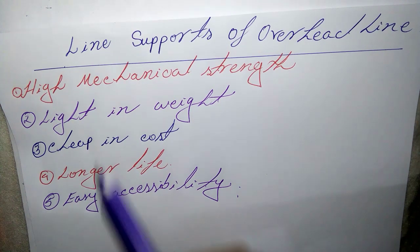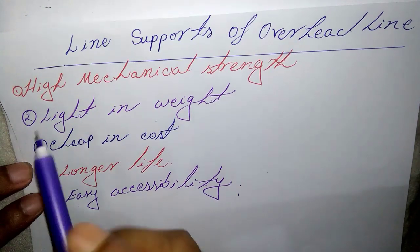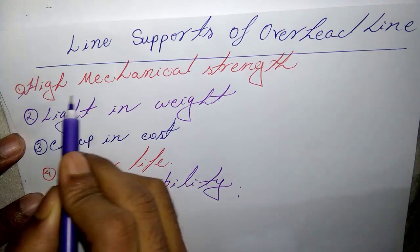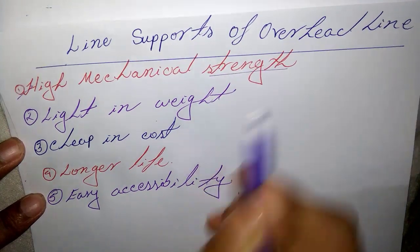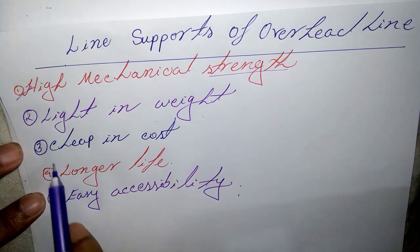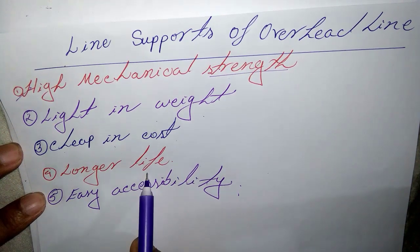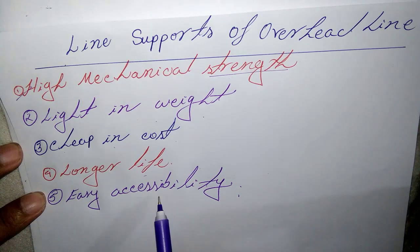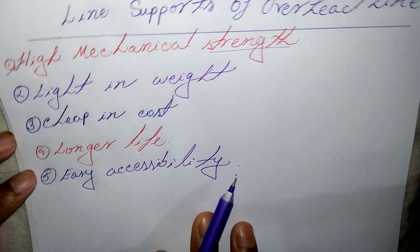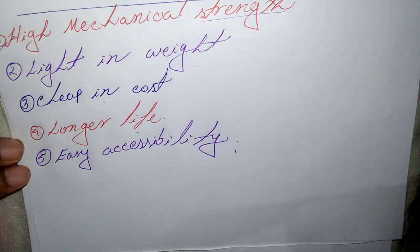In general, line supports should have the following properties: high mechanical strength, light in weight, cheap in cost, longer life, and easy accessibility. Those are the properties of line supports.